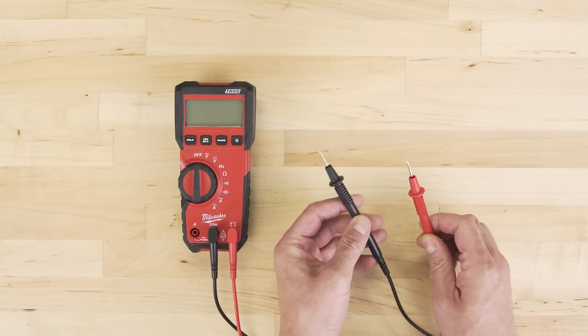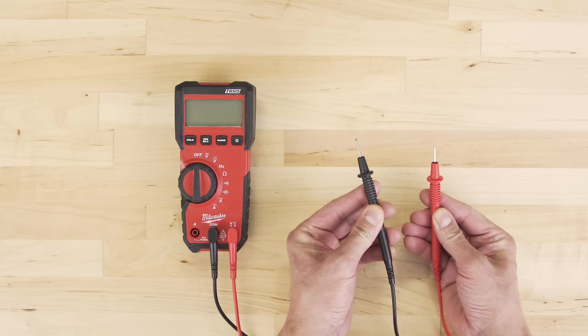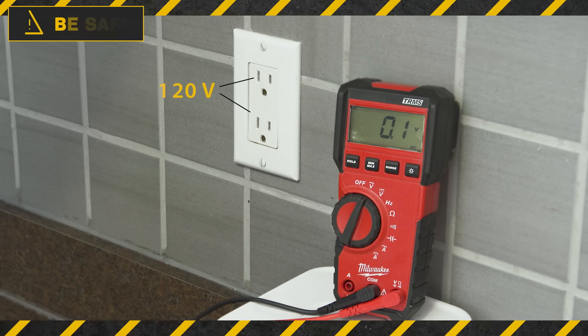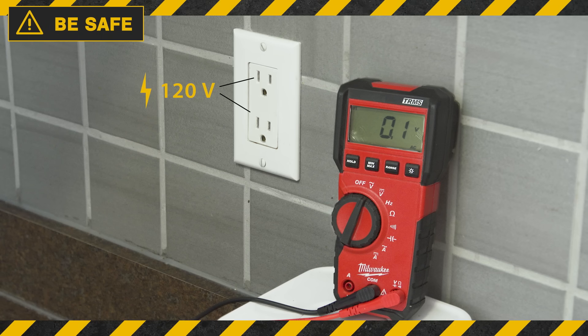To be safe, always hold the multimeter from the insulated handles. Even 120 volts in your home can be deadly, so use caution before testing any live voltage. If you're unsure at any point, then it's best to contact a professional.